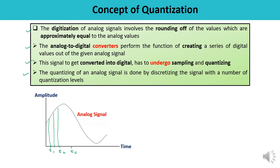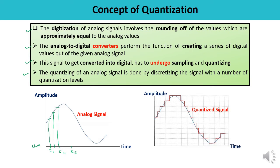After sampling, the signal is no longer a continuous function of time — it becomes a discrete time signal. However, the magnitude of each sample is still taken according to a continuous range. Now in the quantization process, the total amplitude range which the signal occupies — say between MP and MA — is divided into a number of levels.